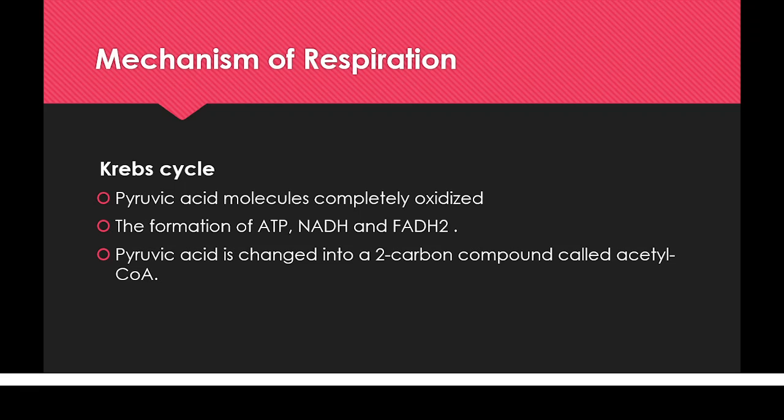The Krebs cycle produces ATP, NADH, and FADH2 as its main outputs. The pyruvic acid created in glycolysis in the cytoplasm converts into acetyl-CoA and enters the Krebs cycle. The Krebs cycle involves many complex chemical compounds, but the overall outputs of the whole cycle are ATP, NADH, and FADH2.